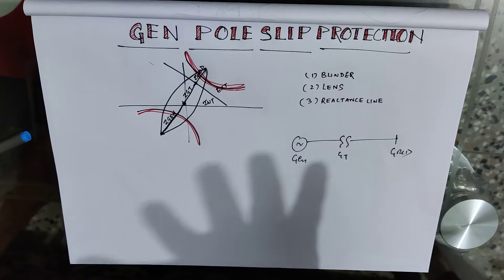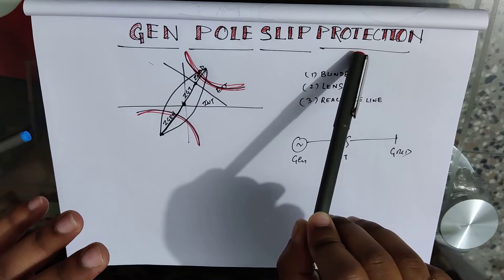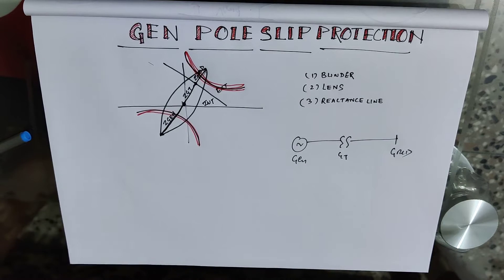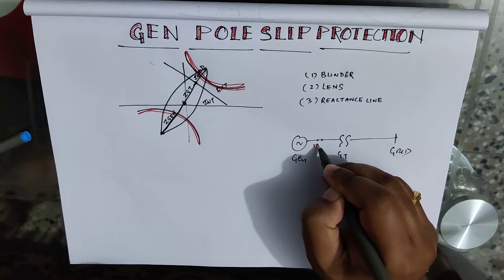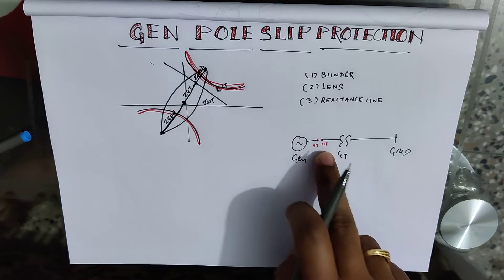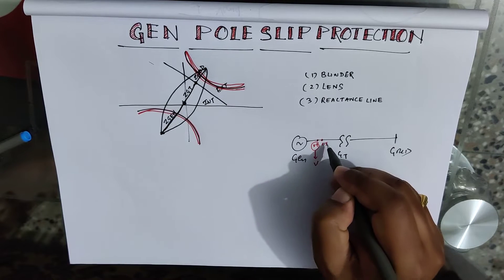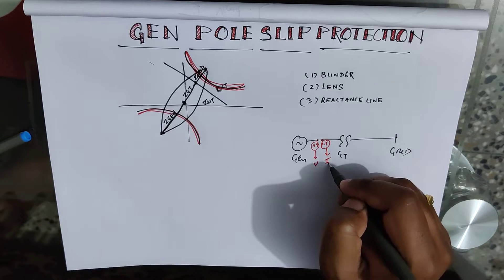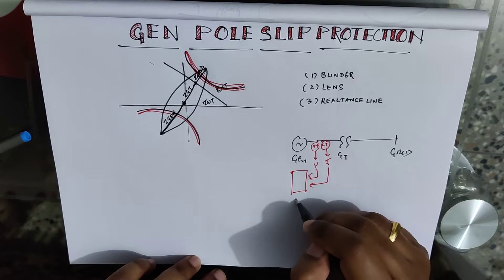To prevent that dangerous blackout condition, this pole slip protection is present in the protection relay of the generator. The voltage transformer and current transformer at the terminal of the generator send voltage and current into the protection relay device.